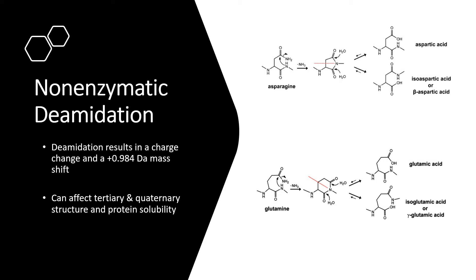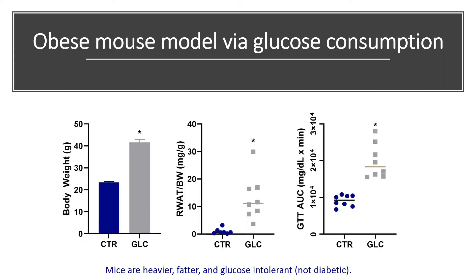This is important because deamidation can affect the tertiary and quaternary structure and protein solubility. In our obese mouse model, mice were put on a 30% glucose water diet for 27 weeks. At the end of the study, glucose mice were much heavier and fatter compared to the control group. The left graph shows body weight, the middle graph shows extracted retroperitoneal adipose tissue confirming fat gain, and the far-right graph shows a glucose tolerance test which confirmed these were not diabetic mice — important because diabetic cataracts form through a different mechanism than deamidation-associated cataracts.